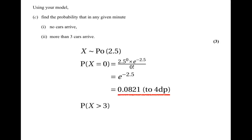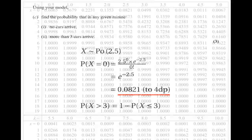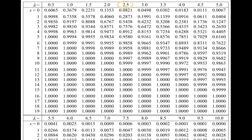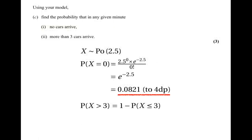Next we find the probability that X is greater than 3. Being greater than 3 is the opposite of being 0, 1, 2, or 3. So P(X > 3) equals 1 minus P(X ≤ 3). From the tables with lambda equals 2.5, P(X ≤ 3) = 0.7576. So the answer is 1 minus 0.7576, which gives 0.2424 to four decimal places.